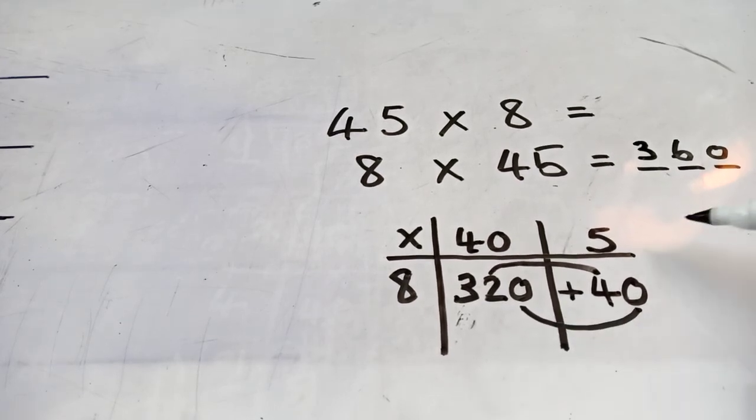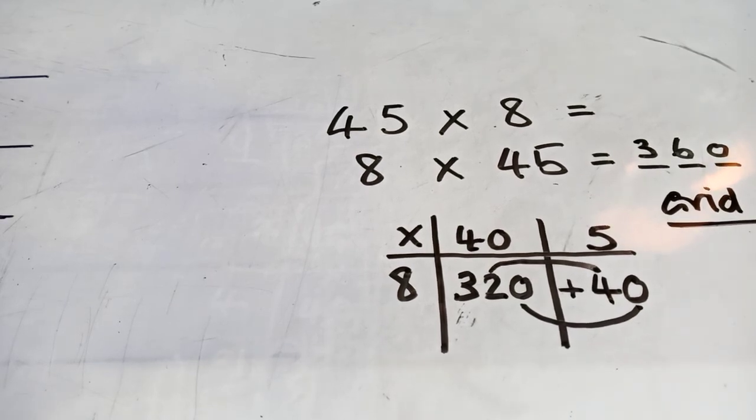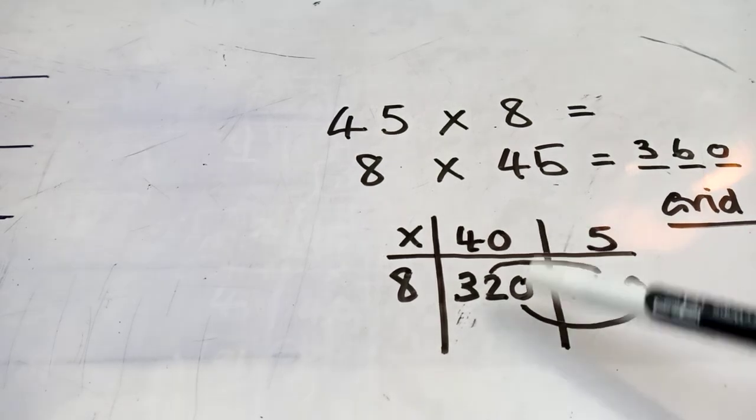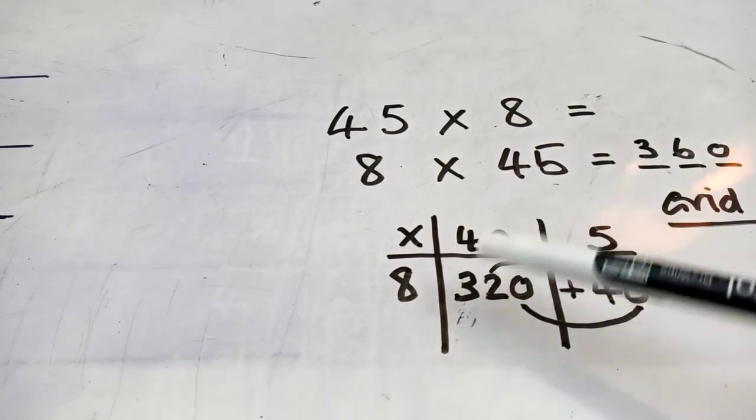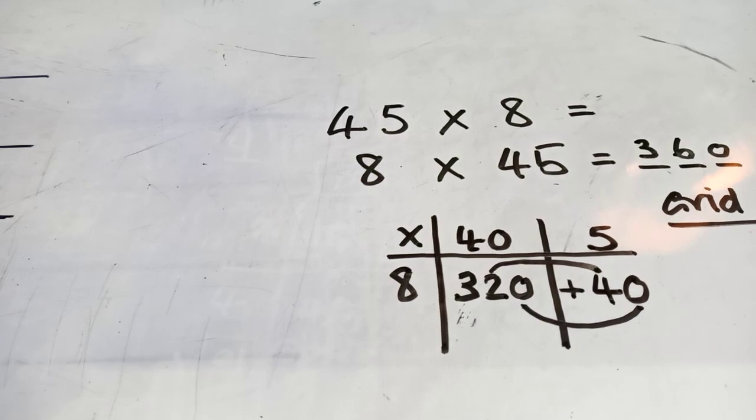Right. This is called the grid method. Okay? And it's the middle step to doing the next grid method, which is slightly more complicated. I'd like you to do all the questions on this sheet. Even if you can do them in your head, I want to see them set out like this. I want to see that you can use the grid method, please. Thank you.